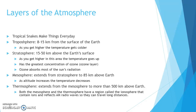Because ozone absorbs most of the sun's radiation, that's why in the stratosphere, as altitude increases, temperature also increases. The mesosphere extends from the stratosphere to 85 kilometers above Earth — here, as altitude increases, temperature decreases, flipping back to what we see in the troposphere. The thermosphere extends from the mesosphere to more than 500 kilometers above Earth. Both the mesosphere and thermosphere have a region called the ionosphere, which contains ions and reflects AM radio waves so they can travel long distances — that's why at night you can hear AM radio stations more clearly.